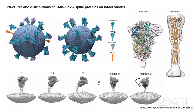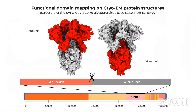The spike structure is not static — it is dynamic and can be found in many conformations: open, closed, two open, or one open. To understand how this connects with genomic data, it is important to appreciate that the majority of available data is genomic sequencing data. When pieced together with an understanding of these protein structures, it really provides a lot of insight into how we can understand what's going on.